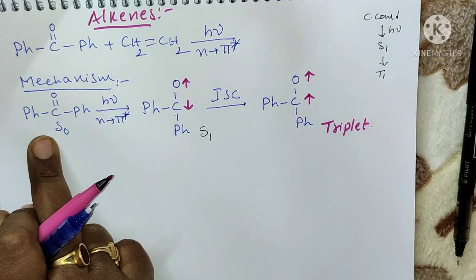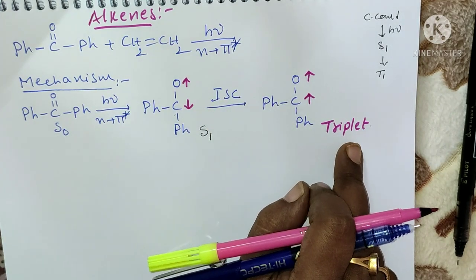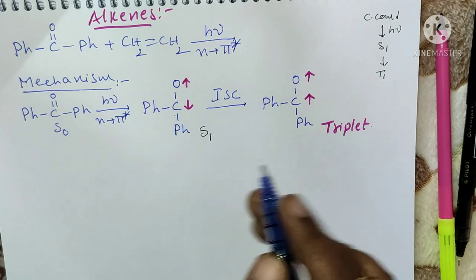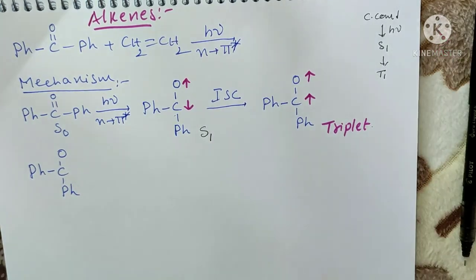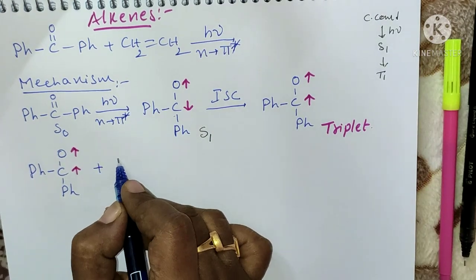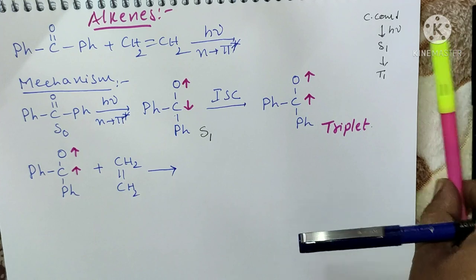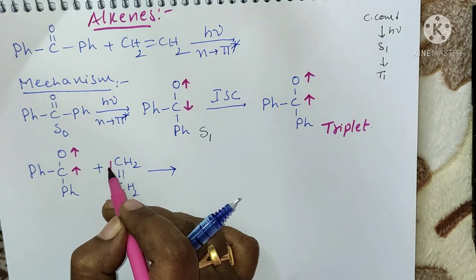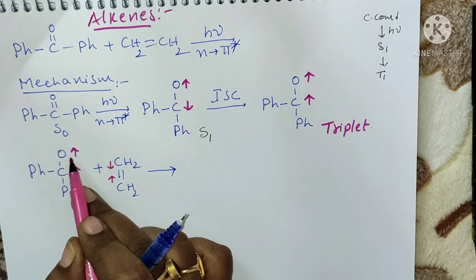The carbonyl compound in the ground state absorbs radiation, is converted into the singlet state, and after inter-system crossing, is converted into the triplet state. This triplet excited carbonyl compound — Ph-C(=O)-Ph — then reacts with our alkene CH₂=CH₂. The double bond of the alkene consists of two anti-parallel electrons, and whenever opposite spins combine together, a bond is formed.